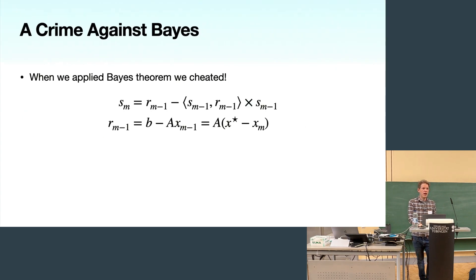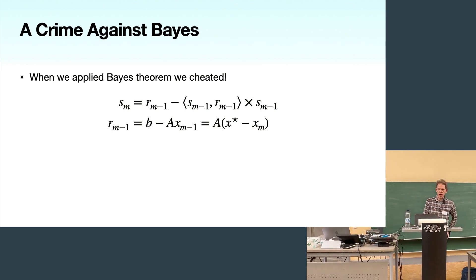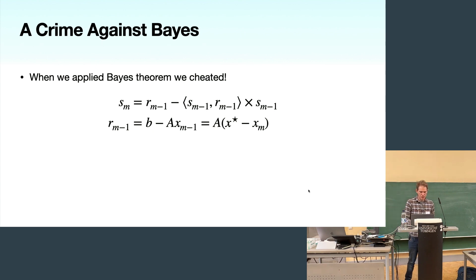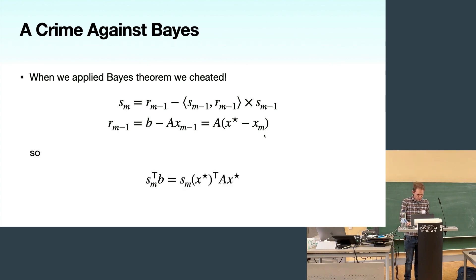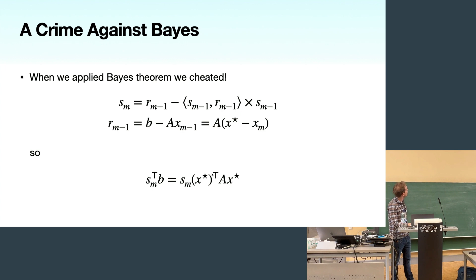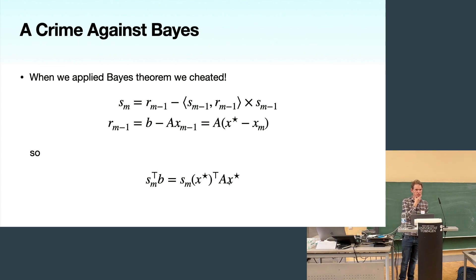What went wrong? Earlier I committed a crime against Bayes. When writing down the search directions, we used the m-th residual B − A X_{m−1} = A(X* − X_{m−1}), so the search directions know what the true solution is. This means Y_m = S_m^T B has a quadratic dependence on X* rather than linear. We pretended this information was linear to apply the Gaussian conditioning formula — and that's what leads to poor uncertainty quantification.